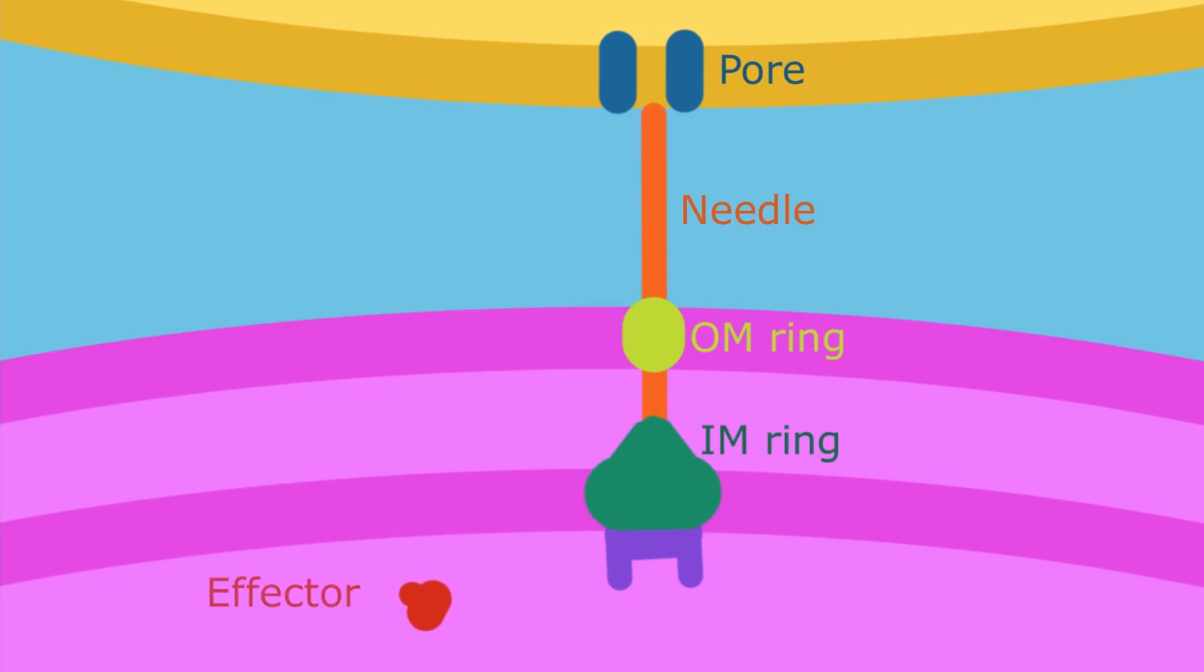Through this needle, the effector protein can be transported through and then enter the target cell.